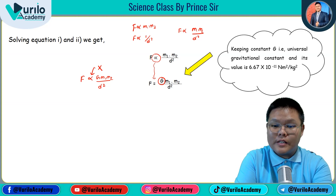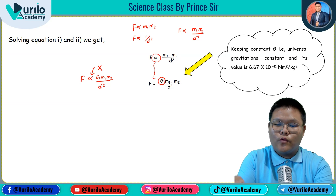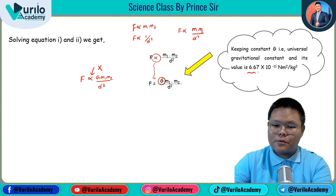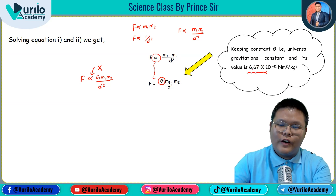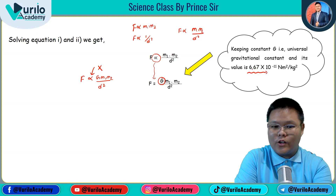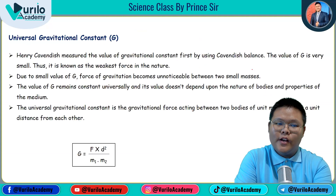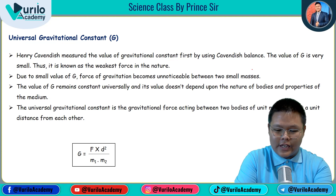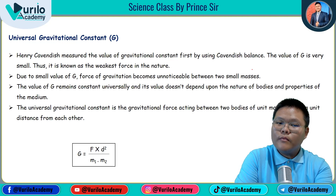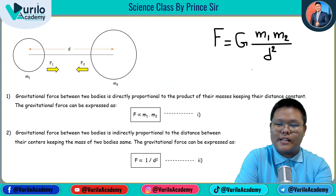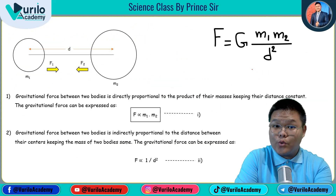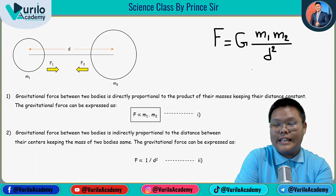The universal gravitational constant G has a value of 6.67 × 10⁻¹¹ N·m²/kg². This value is very important — you will need it in numerical problems. The universal gravitational constant will be covered further in the next video. For the exam, if asked to prove the formula, use the steps above. Thank you so much.